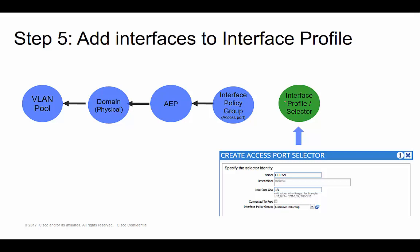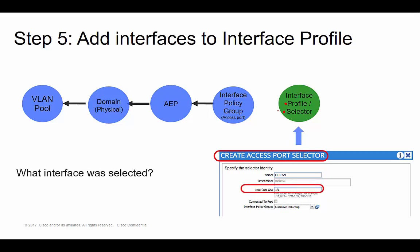Let's go ahead and do step five. Notice here, what you do is you actually create an interface profile. But from within that, you launch something called the interface selector and select interfaces from there. I'm inside the interface selector and I'm selecting interface 1/1. And then again, you map it back to the previous step — I'm mapping it back to the interface policy group.